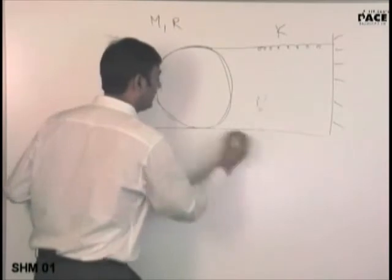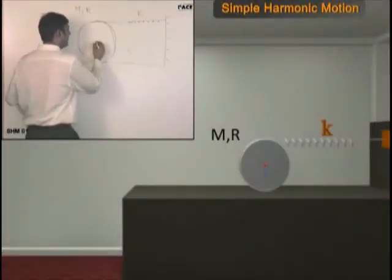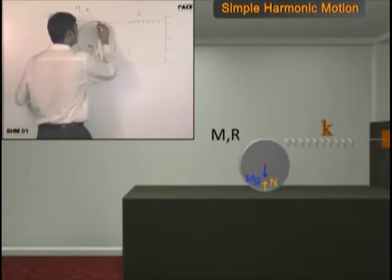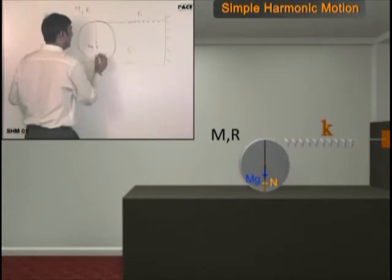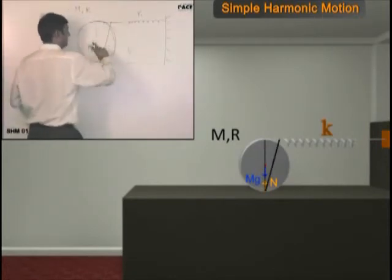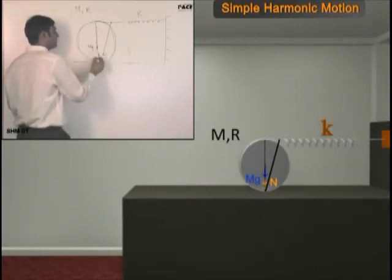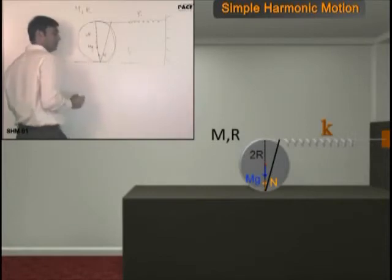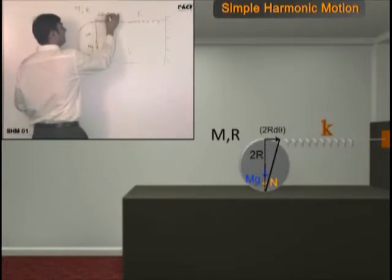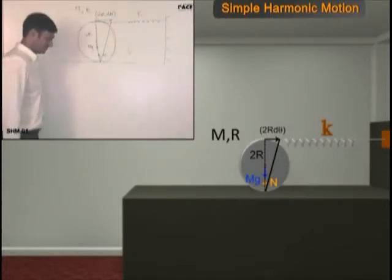Please tell me if I assume instantaneous axis of rotation here, can I say mg, normal reaction, spring force. If I displace it by dθ, will every point be displaced by dθ about this axis? What is this distance? 2R. So what will be this displacement? 2R dθ. So how much is the spring compressed? 2R dθ.